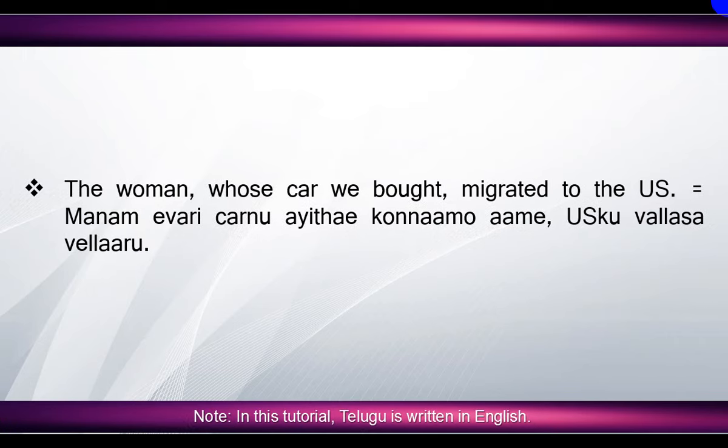'The woman whose car we bought migrated to the US' means 'manam yavari carnu aite konnaamo, aame U.S. ku walasa wellearo'. Here, 'woman' — in this sentence we can say 'aame', which means 'she'. 'Whose car we bought' means 'manam yavari carnu aite konnaamo'. Car is an object, so we added 'nu' suffix. 'Bought' means 'konnaamo', 'migrated' means 'walasa wellearo', 'to the US' means 'U.S. ku'.